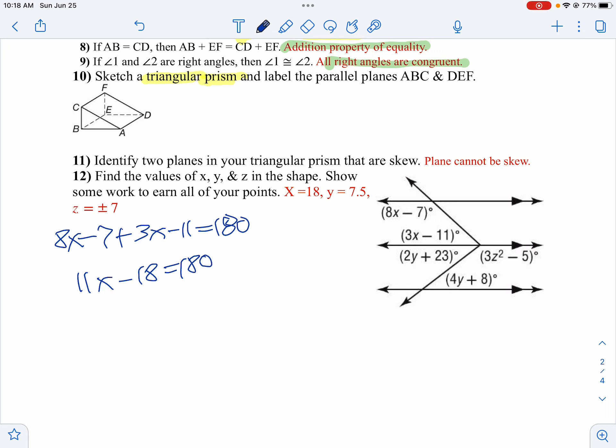Now we'll solve for x. We'll add 18 to both sides. So 11x equals 198. I divide both sides by 11, and x would be 18.